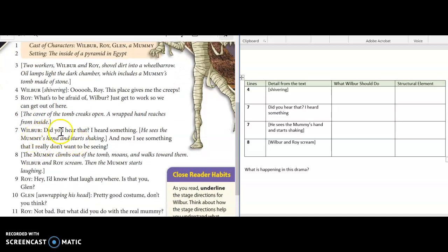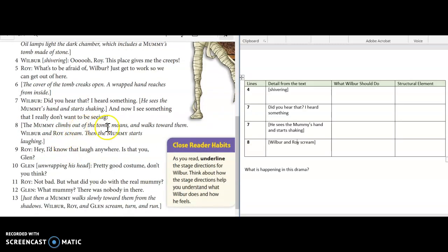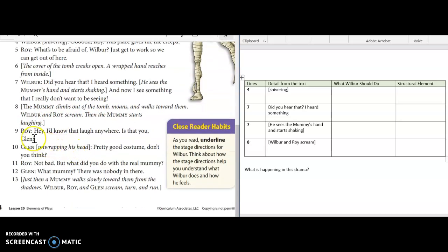The cover of the tomb creaks open, a wrapped hand reaches from inside. Wilbur: 'Did you hear that? I heard something.' He sees the mummy's hand and starts shaking. 'And now I see something that I really don't want to be seeing.' The mummy climbs out of the tomb, moans and walks toward them. Wilbur and Roy scream. Then the mummy starts laughing. Roy: 'Hey I'd know that laugh anywhere, is that you Glenn?' Glenn unwrapping his head: 'Pretty good costume don't you think?' Roy: 'Not bad but what did you do with the real mummy?' Glenn: 'What mummy? There was nobody in there.' But just then a mummy walks slowly toward them from the shadows. Wilbur, Roy and Glenn scream, turn and run.